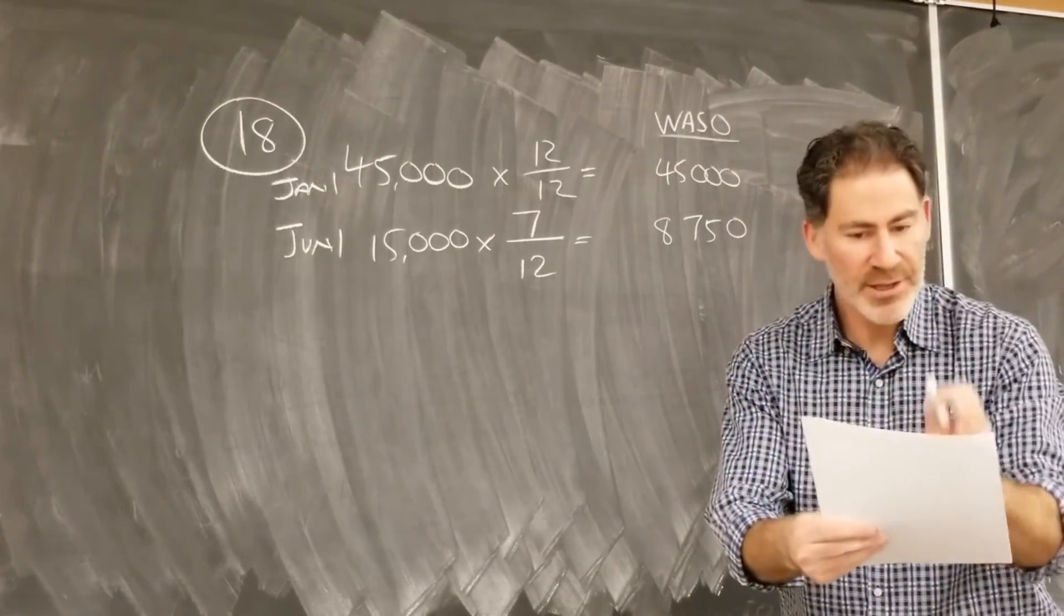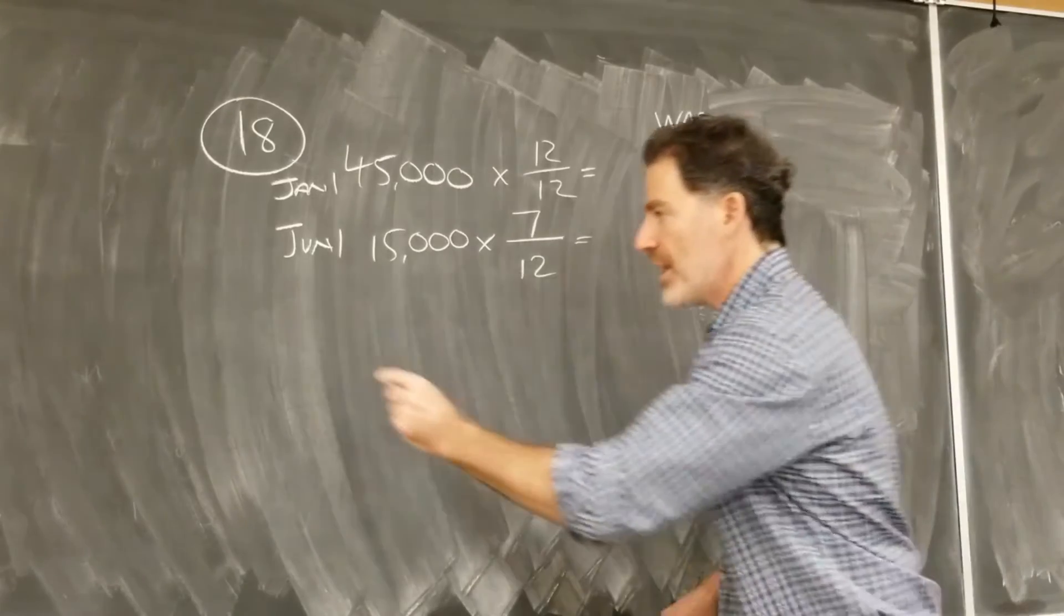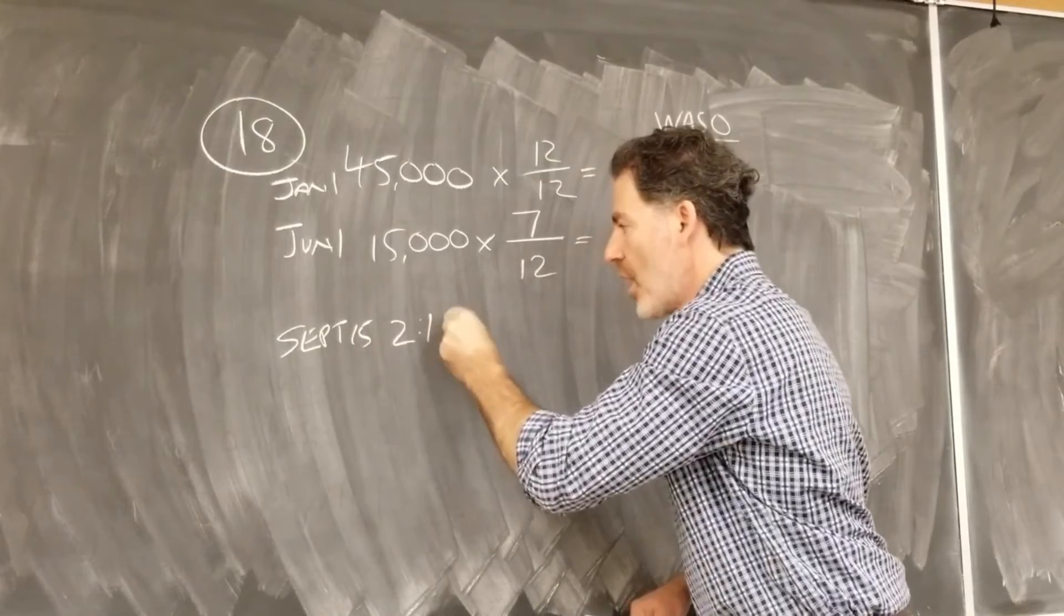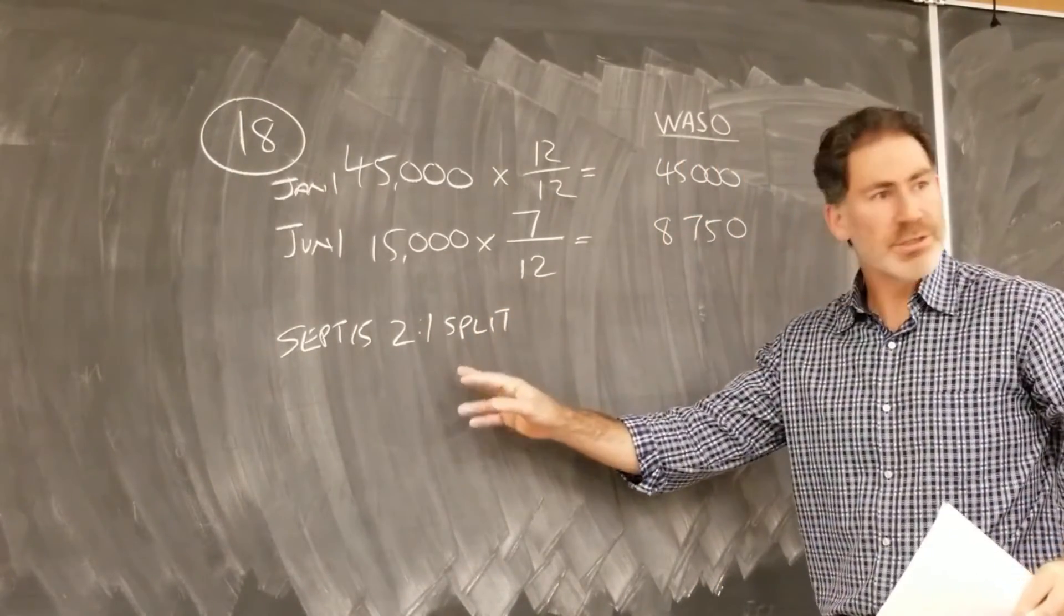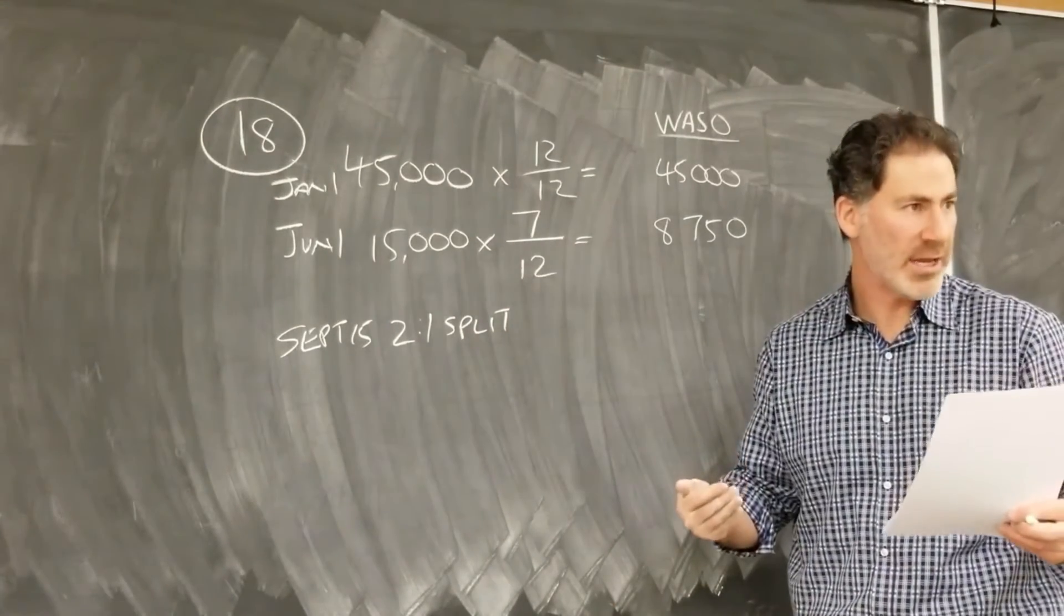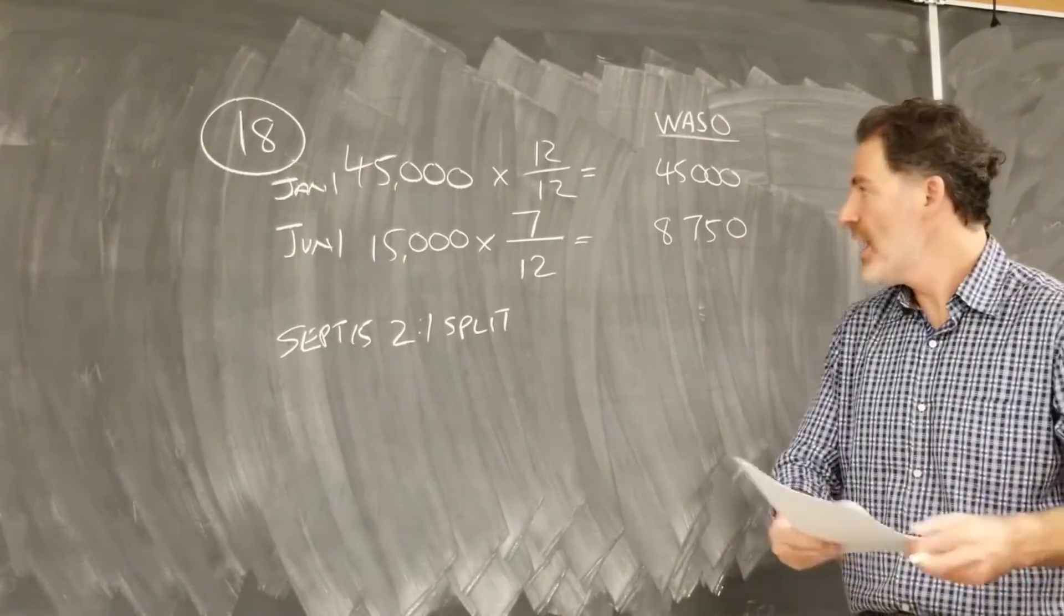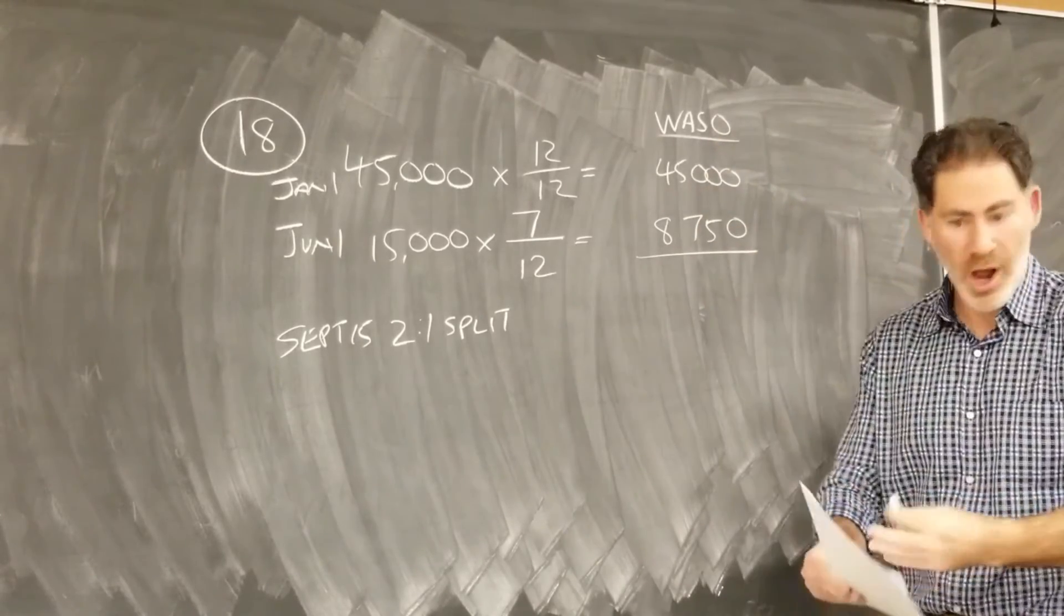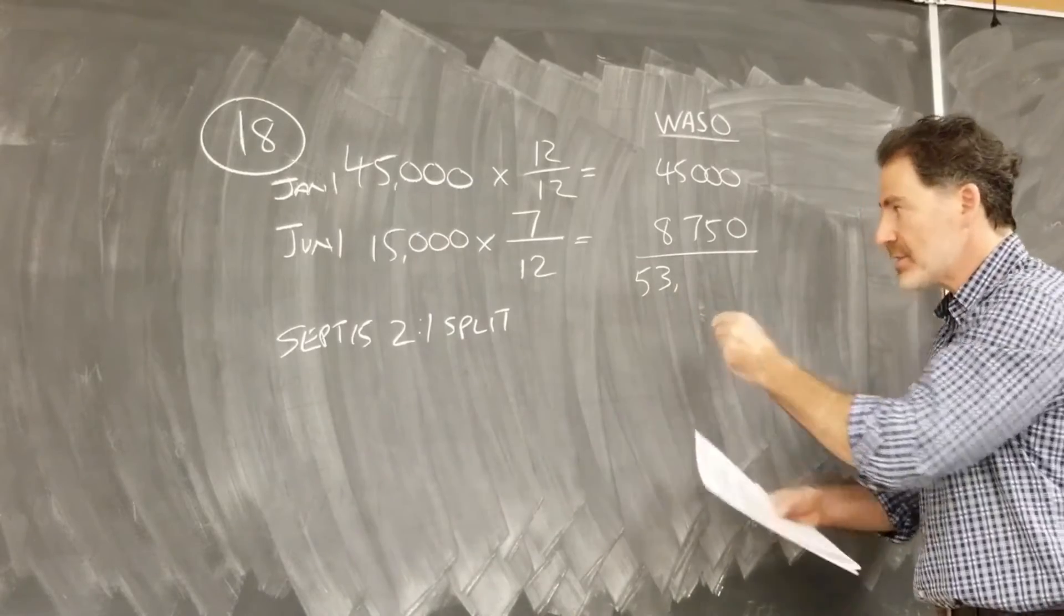And then they tell us there's a two for one stock split on September 15th. Now, we know from our rules that stock splits and stock dividends are given a full year's weighting. So how do we handle this? A very simple way is just to take the shares that were outstanding before the stock split. We'll add it up. The total is 53,750.